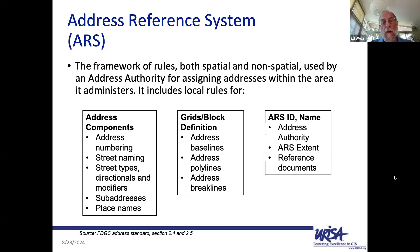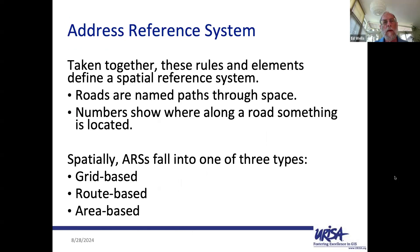That's the essence of the address reference system — it's really a set of rules. There's no spatial zero point that defines all addresses, just as there's no single zero point for all coordinate reference systems; each one has its own. Taken together, the rules and elements define the spatial reference system. Roads are named paths through space. Numbers show where along a road something is located. That's how these rules enable us to navigate through space by inferring patterns.